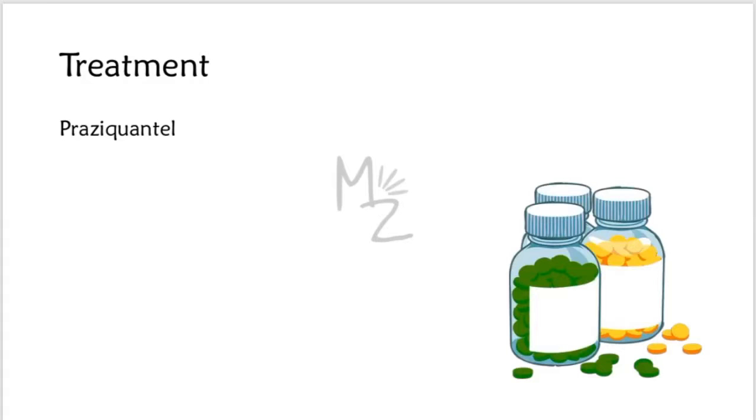Treatment. The treatment of choice for all these three species: Schistosoma, Clonorchis, Paragonimus, is praziquantel.